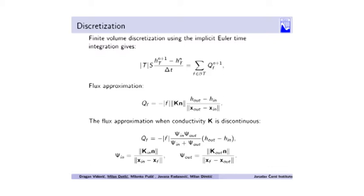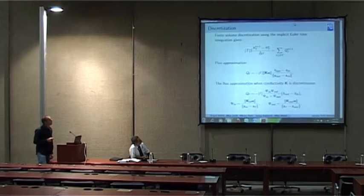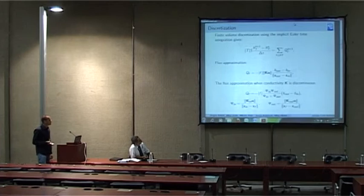We perform finite volume discretization, spatial discretization, and implicit Euler temporal integration. This gives us the following relation. And now instead of having a continuous field of hydraulic head, we have its discrete values in cells. Flux is approximated with simple finite difference.